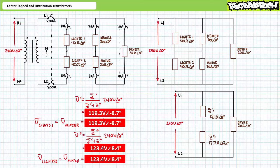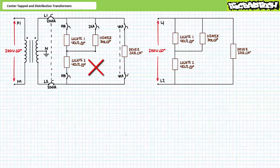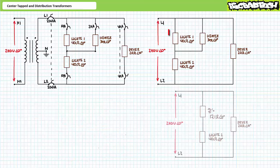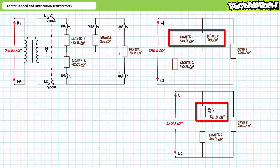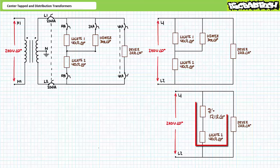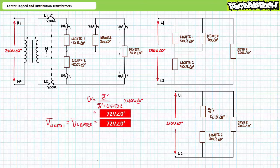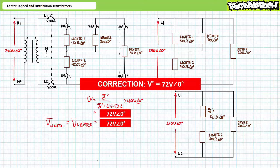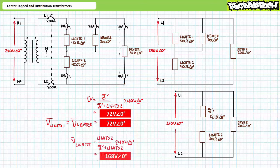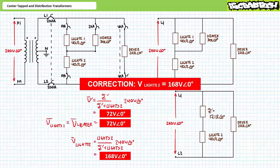No longer is voltage equal between these single phase loads. Understandably, current through and thus power dissipated by these elements lacking the neutral connection will also change. Consider what happens when the motor turns off. The first lighting load and the heater remain in parallel presenting impedance Z' of 17.1 ohms at an angle of zero degrees. Z' and the second lighting load are now in series with one another across a 240 volt differential. An application of the AC voltage divider rule demonstrates Z' experiences 87.3 volts at an angle of zero degrees, while the second lighting load experiences 152 volts at an angle of zero degrees.